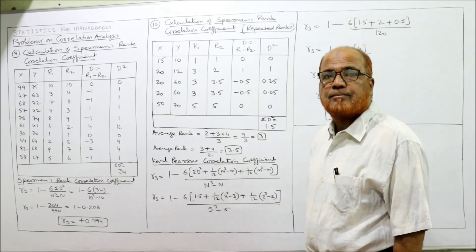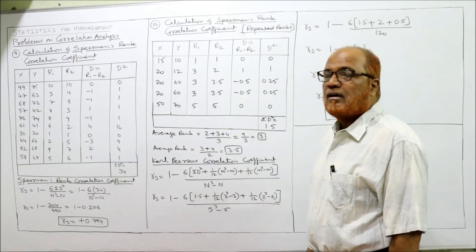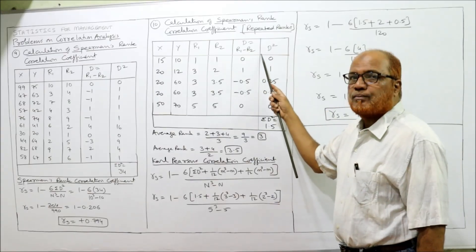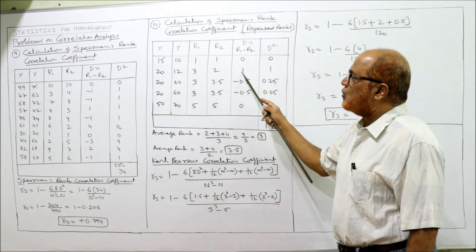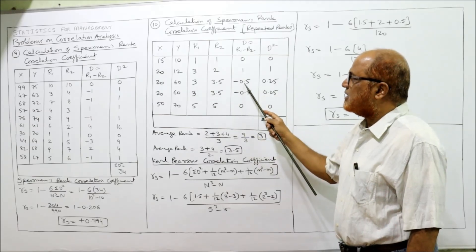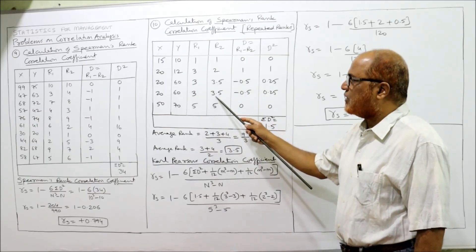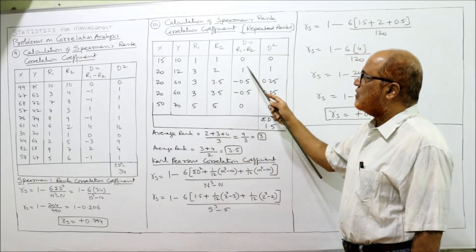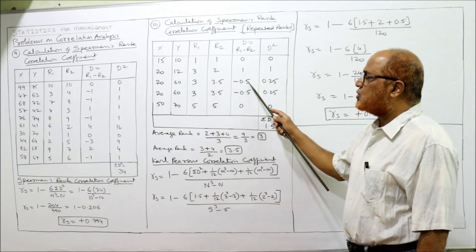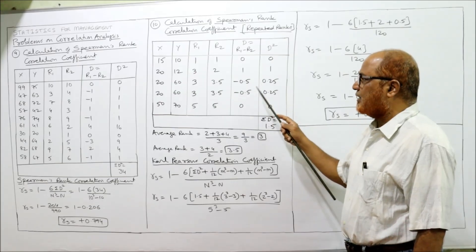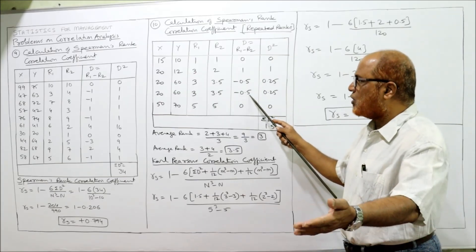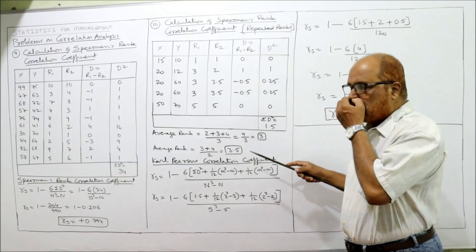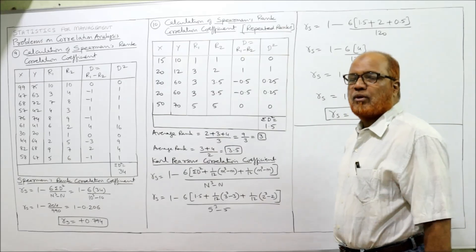This is the new point — average rank for repeated values. Now calculate D = R1 − R2: 1−1=0, 3−2=1, 3−3.5=−0.5, 3−3.5=−0.5, 5−5=0. Squaring: 0, 1, 0.25, 0.25, 0. Total ΣD² = 1.5.